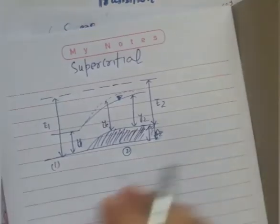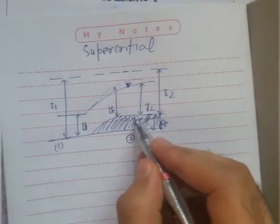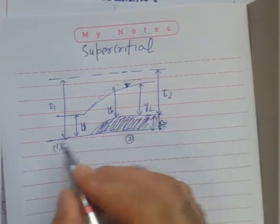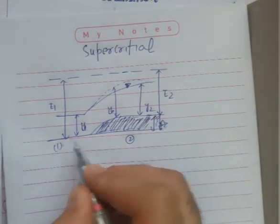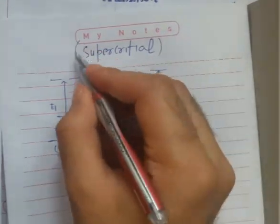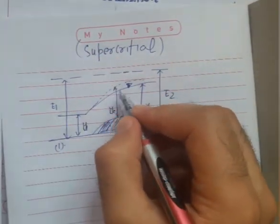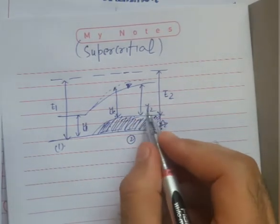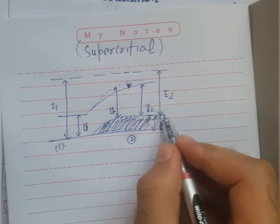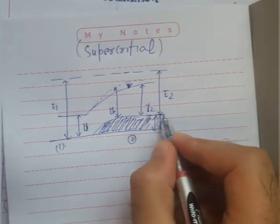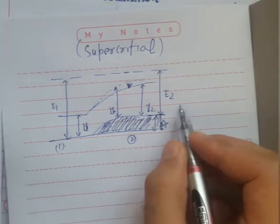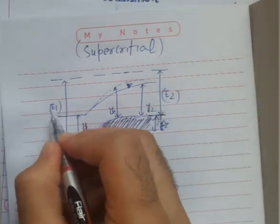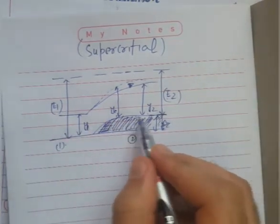I have made a hump here with height ΔZ. This is section 1 and this is section 2, where supercritical flow occurs. This is the critical depth yc, and y2 is the depth of flow at section 2. The specific energy e2 and e1 are measured from the bed level.